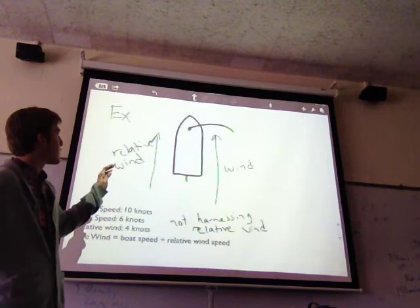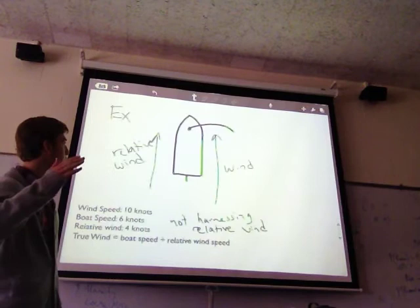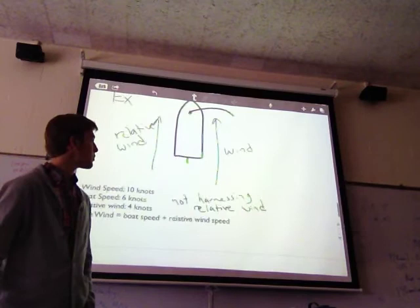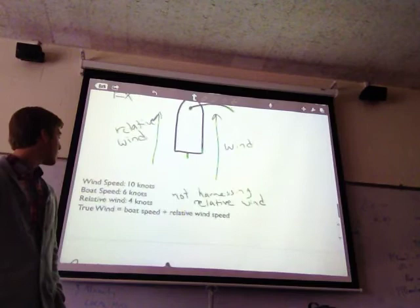And it's because if you're going straight downwind, you have the wind, the actual wind coming in and hitting your sail. And then you also have what's called relative wind. But in this situation, the relative wind is not having any effect at all. You're just getting the force from the actual wind. So if the wind speed's 10 knots and the boat's going 6 knots, you're not using the relative speed.